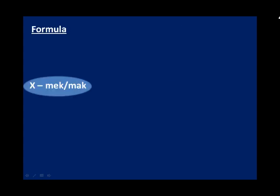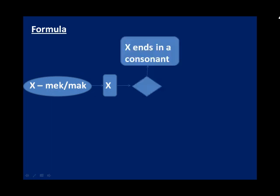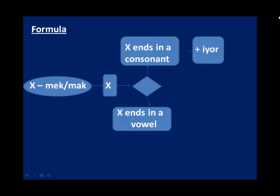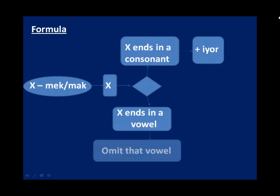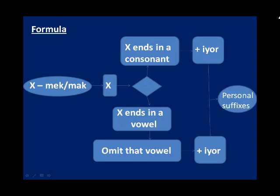So our formula is: when you have a verb X-mek or X-mak, X is the verb root. First, omit the infinitive and get the verb root X. Then there are two possibilities: X either ends in a consonant or ends in a vowel. If X ends in a consonant, add '-iyor' and harmonize it. If X ends in a vowel, first omit that vowel, then add '-iyor' and harmonize. After all these steps, add the personal suffixes — and you've conjugated your verb.